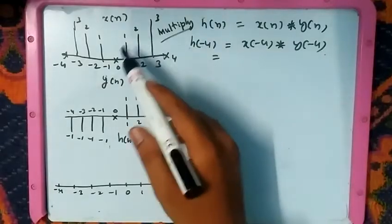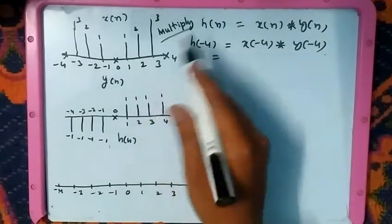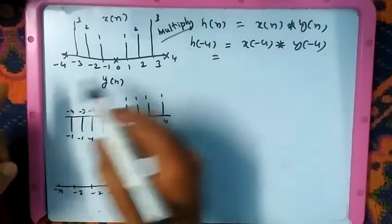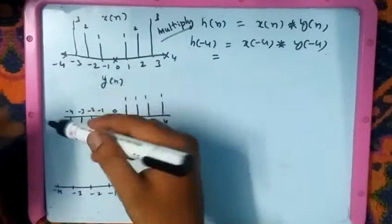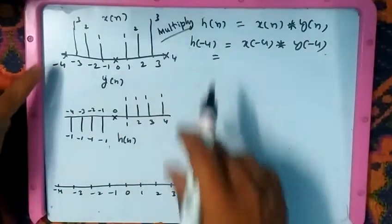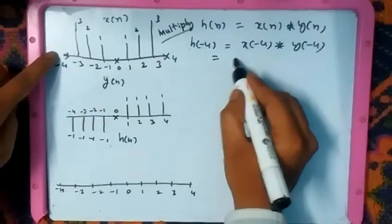We are going to see the multiplication of the two signals x of n and y of n. To multiply, check the positions and amplitudes, and multiply the amplitudes.